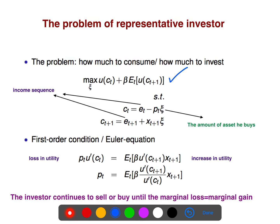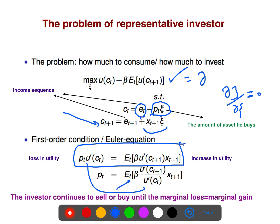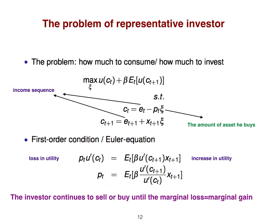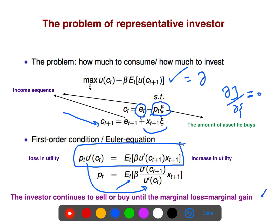When you maximize this, as I said, you have an income sequence. The amount of asset he buys - this is what he has bought. At time t plus one, you have another consumption because it is additive. You have an added extra payoff. If you take derivative with respect to the quantity - if this is the J, the cost J - if you take derivative with respect to the quantity and solve that, you get this equation. Because your filtration is up to time t, you can put u prime here easily inside the expectation with no problem. The investor continues to sell or buy until the marginal loss is equal to marginal gain.